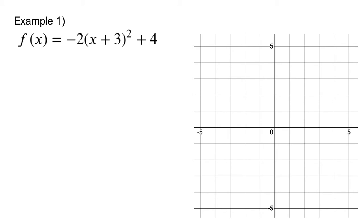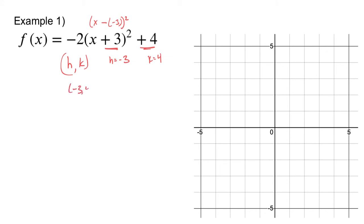f of x is equal to negative 2 times the quantity of x plus 3 squared plus 4. We could graph this using transformations. Or if we remember what h, k is equal to, we can look here and see that h is equal to negative 3 — that's because that would be x minus negative 3 in the parentheses. And here k is equal to 4.